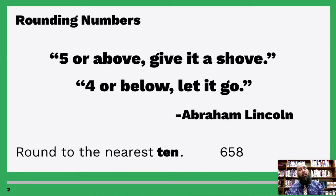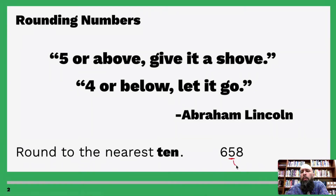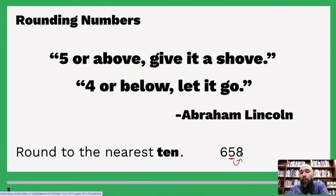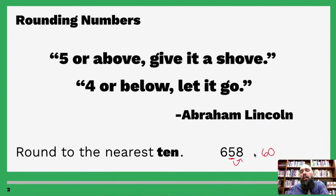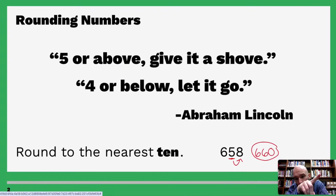Now what's going to happen is it will tell you to round to the nearest something. We know place value — the tens is the second digit. If I want to round to the nearest ten, I look at the number to the right of it. If it's five or above, you shove it up and make a zero. Eight is five or above, so we turn that eight into a zero and shove five up to six. If it's four or below, let it go — leave that number as is.